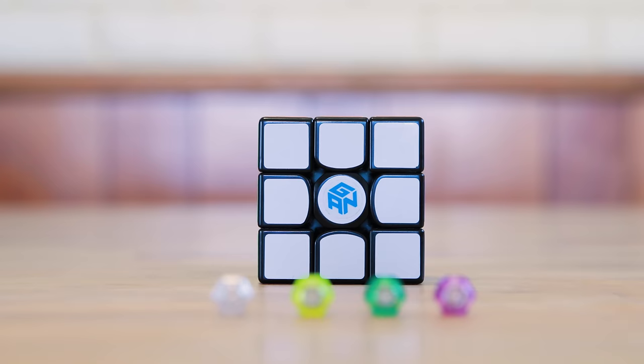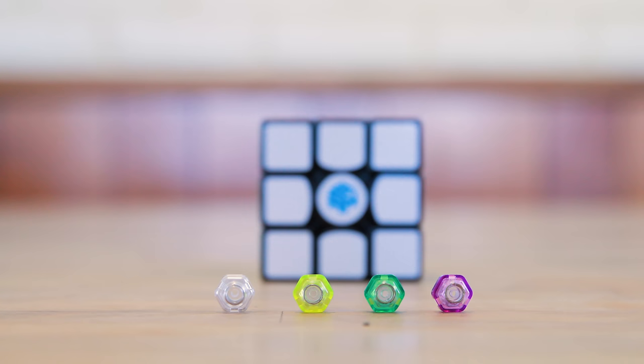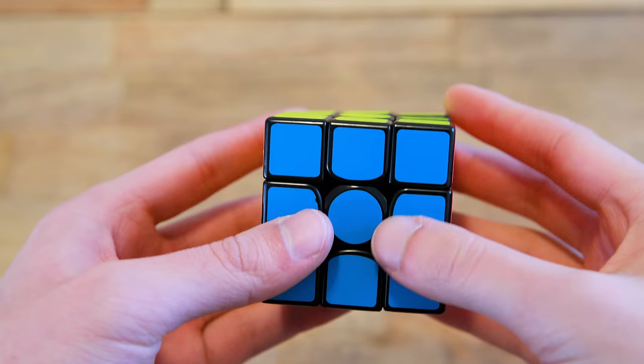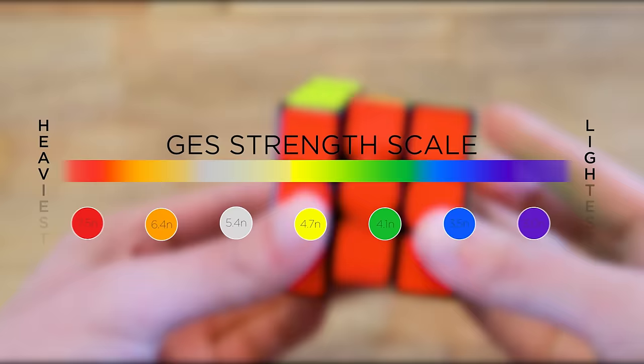The feel of this cube largely depends on the setup. Over the course of testing this cube, we've found 3 alternative GES setups that work: clear, green, and yellow. The cube comes with purple springs, and we'll be taking a look at that setup in this section of the review. So the cube comes lubed by the factory, and has a light and springy feel. The purple GES are on the lighter side in the GES spectrum, and so the pieces don't feel tightly bound together. There's a lot of freedom to move.